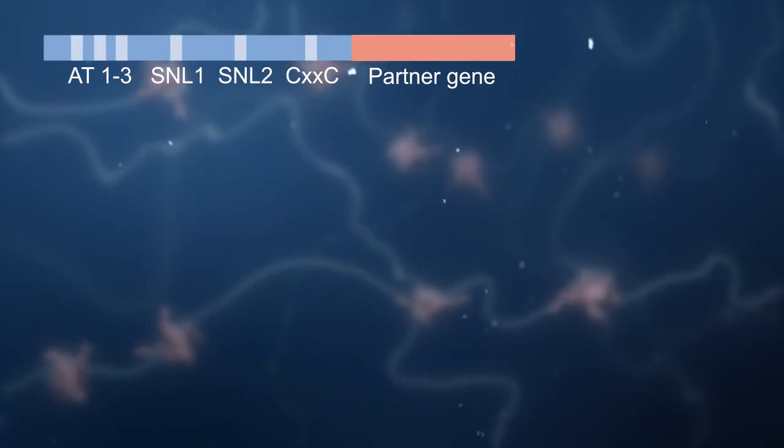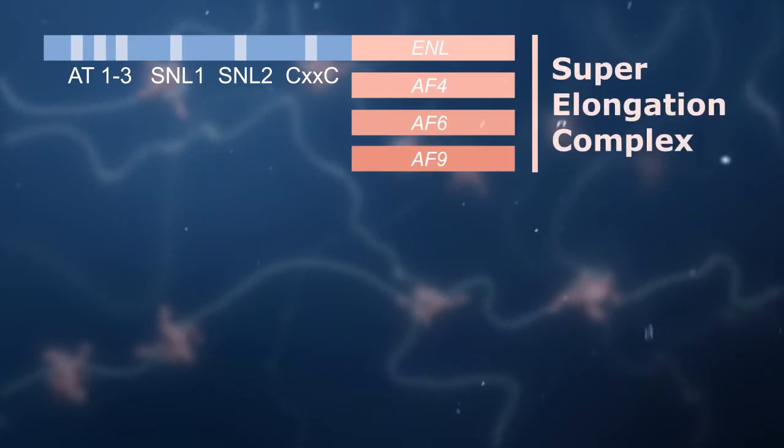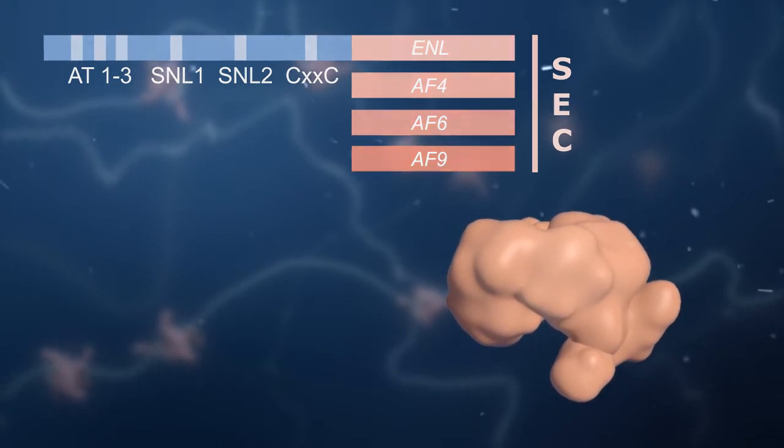The most common partners of MLL are genes encoding subunits of the super elongation complex, or SEC. This complex regulates the checkpoint control stage of transcription elongation.